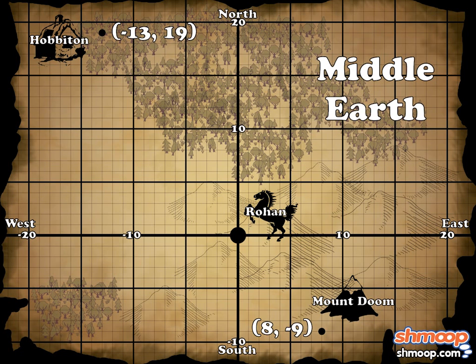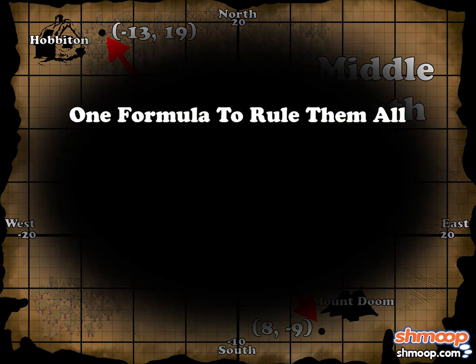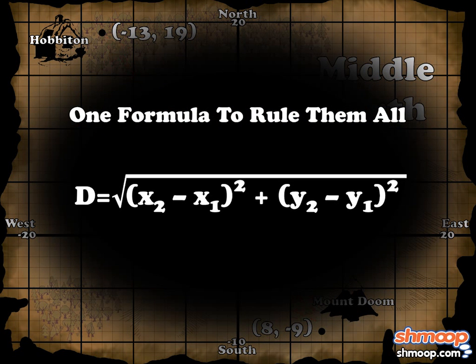Now that we have the coordinates of our two endpoints, we can calculate the distance between them using the one formula to rule them all. The distance d equals the square root of (x2 minus x1) squared plus (y2 minus y1) squared, where (x1, y1) and (x2, y2) are the coordinates of the two endpoints.